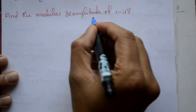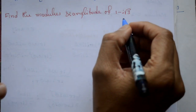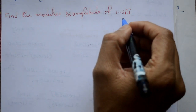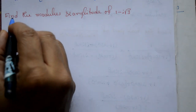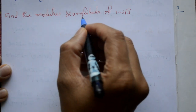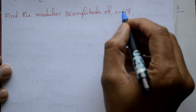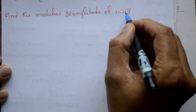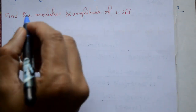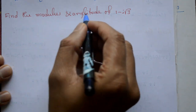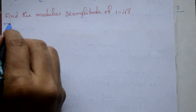Welcome students. This problem ko hum solve kareenge. A problem complex number mein aata hai. Find the modulus and amplitude of 1 minus i into root 3. So, modulus and amplitude find it kareenge.